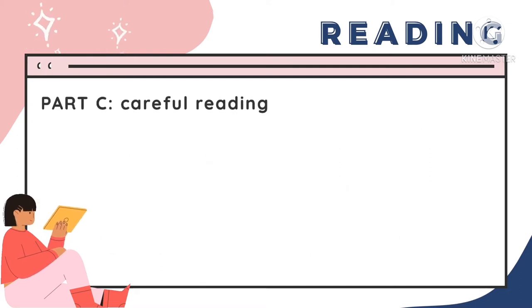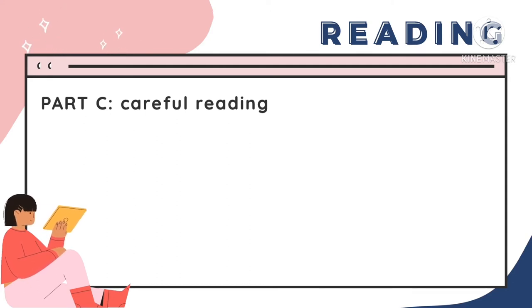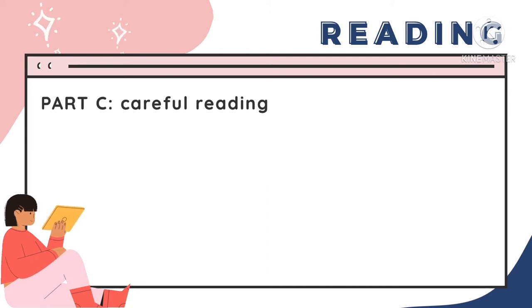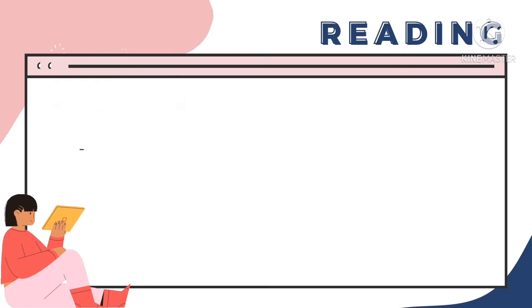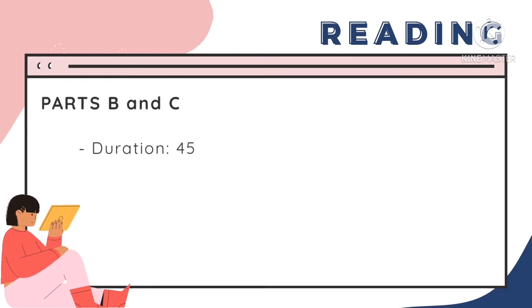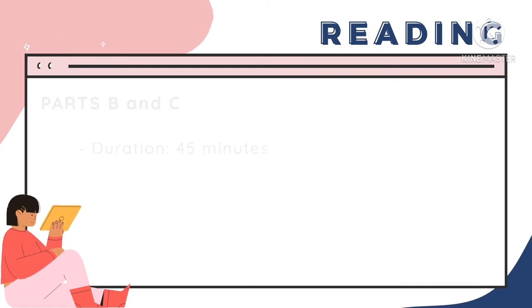Meanwhile, Part C covers two long texts divided into paragraphs and you will get eight multiple choice questions with four options. This assesses your ability to identify detailed meaning. There are also one to two questions that will ask about the context of a word or phrase used in a paragraph. You have 45 minutes to complete Parts B and C, so make sure to monitor your time carefully.